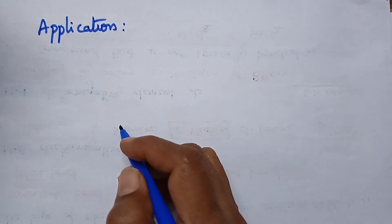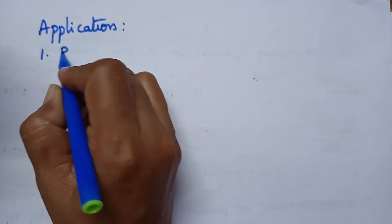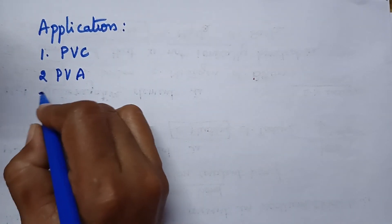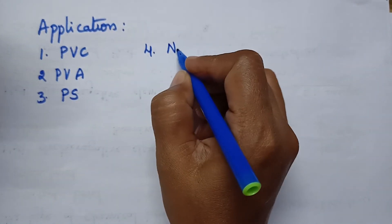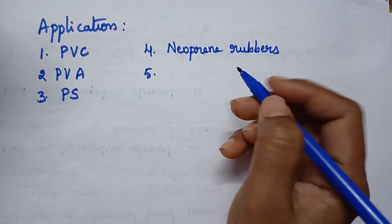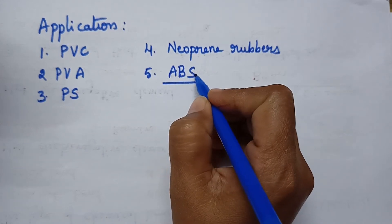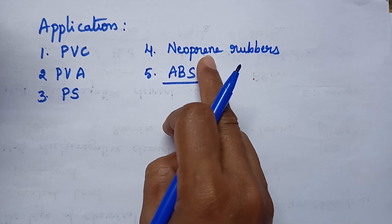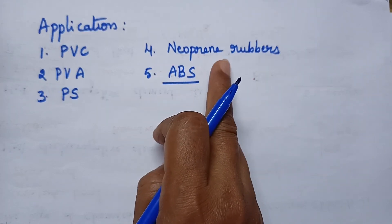Let us discuss the applications of emulsion polymerization. This technique is highly useful for conducting addition polymerization, and is used for the preparation of PVC (polyvinyl chloride), polyvinyl acetate, polystyrene plastics, and neoprene rubbers. It is also highly useful for the preparation of ABS plastics, which are known for their unique feature of tensile strength.